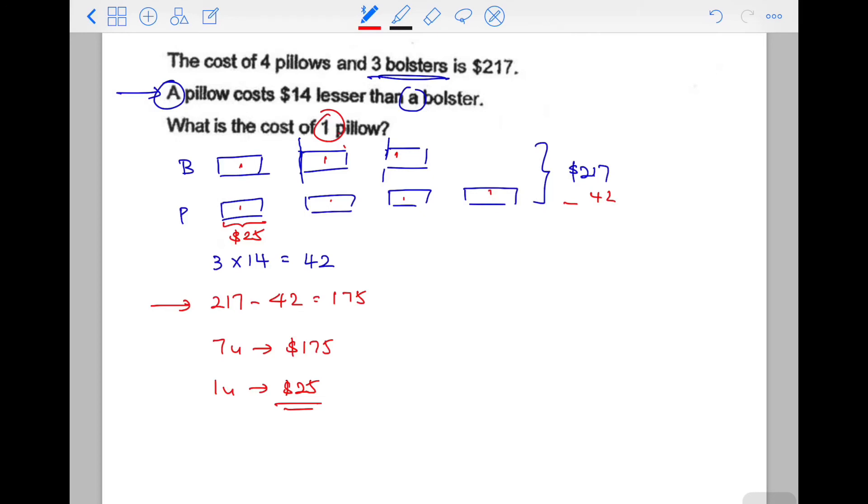With the numbers—the 217 and the $14 that was removed—it gives a better, clearer understanding of why we need to remove them.